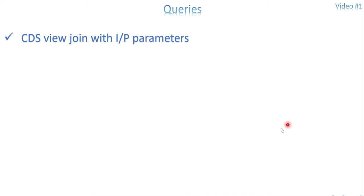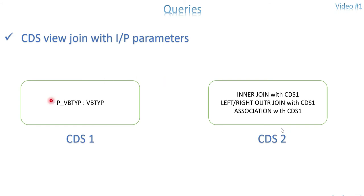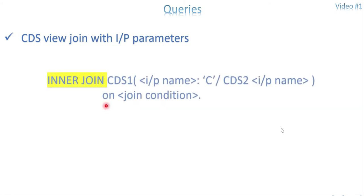I will also show this in the system. First, if it is an inner join, the syntax would be: SELECT FROM your table or view name, then INNER JOIN followed by your CDS view name. Within curly braces you place your input parameter name — for example, if my input parameter name is p_vbtyp, you use p_vbtyp: and then the constant value. Note: there is no equal operator here; you use a colon followed by the value.